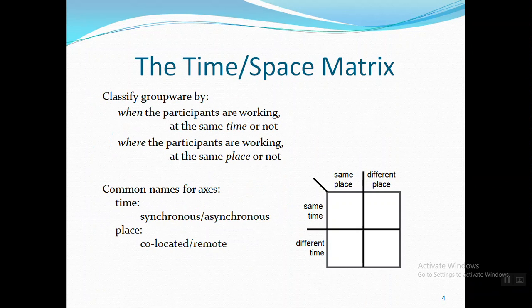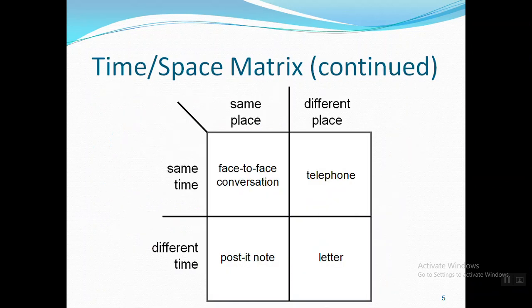Going a bit more in depth into the time-space matrix: with respect to time, we have synchronized versus asynchronous time, meaning whether team members work at the same time or not. Similarly, for the place parameter, whether it is co-located or remote — meaning whether the team members are working in the same place or in different places. One example for each of the four combinations is provided here.